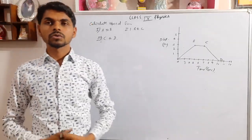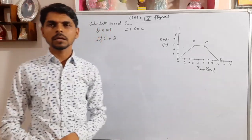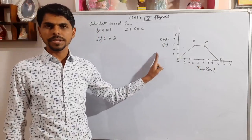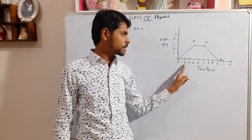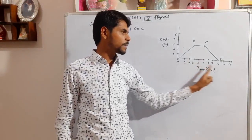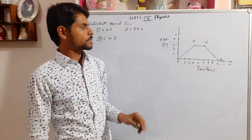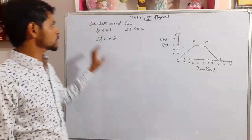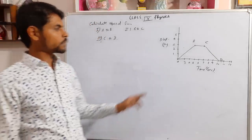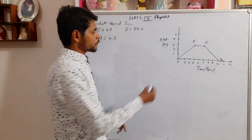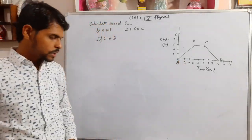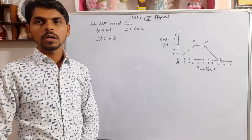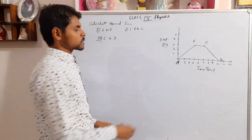Now we move to the second numerical based on the distance-time graph. A graph is given with time in seconds on the x-axis — starting at 3, with intervals of 1 — and distance in meters on the y-axis from 1 to 5. The question asks us to calculate the speed from A to B, then from B to C, and then from C to D.